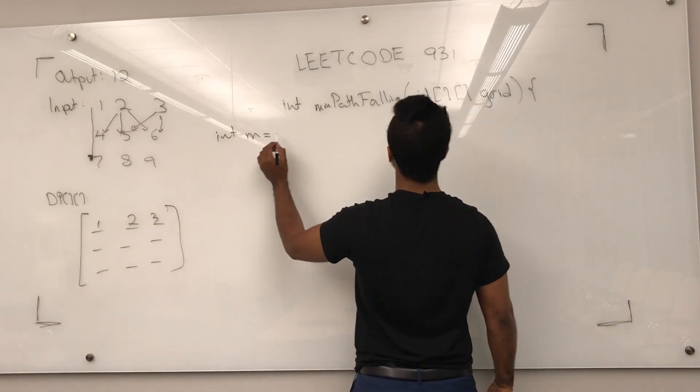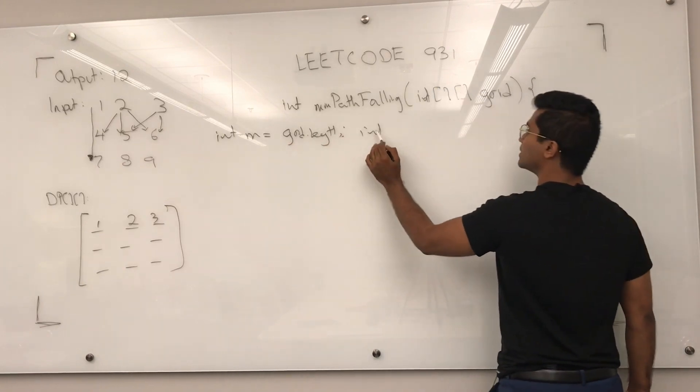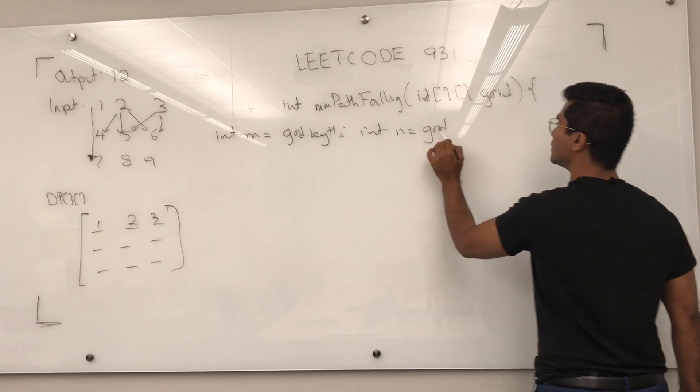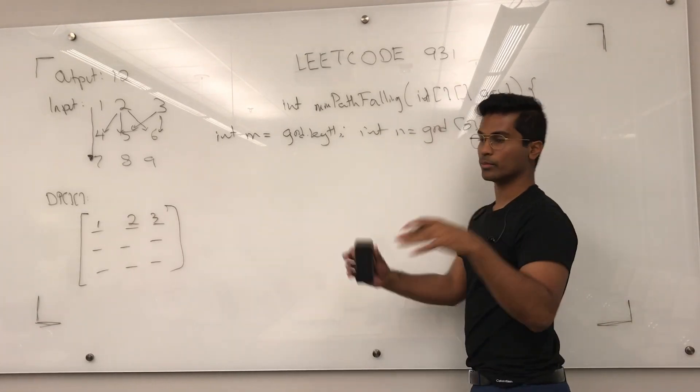So, int m is going to be grid.length. Int n is going to be grid[0].length. This is just the height and width.